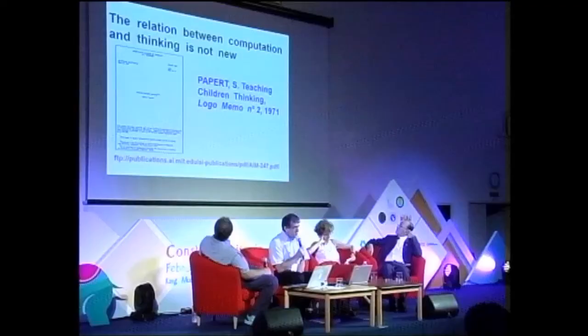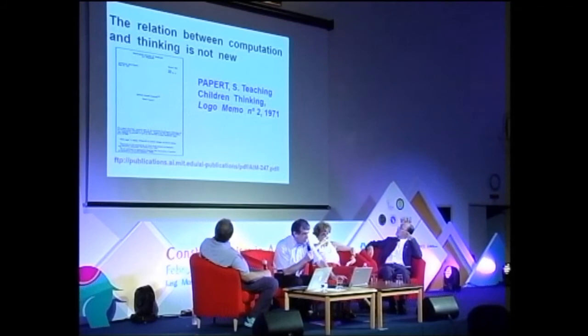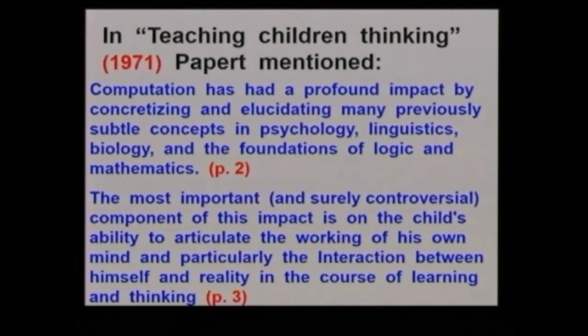This is a paper by Seymour, 'Teaching Children Thinking,' paper number two, 1971. The idea that computation is related to thinking and to learning was already there in 1971. Every paper that I read about computational thinking mentions the work of Seymour Papert in the first two paragraphs. People know what happened before in terms of what Seymour said and the work that we are doing. So this is a good group for us to play around with this idea and understand what we mean by computational ideas.